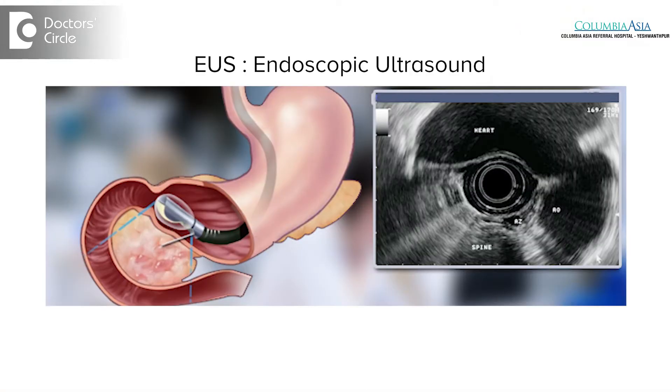— which is a specialized procedure done with the help of an equipment called an echo endoscope, which, unlike a normal endoscope, has a scanner attached to the tip of the endoscope, with which we can obtain high-definition ultrasound images of the gastrointestinal tract and the organs adjacent to it.